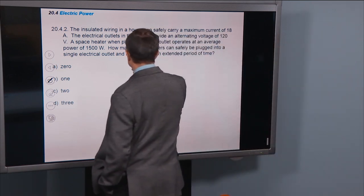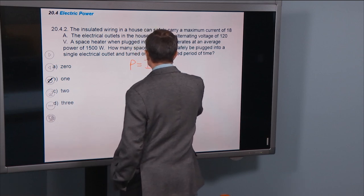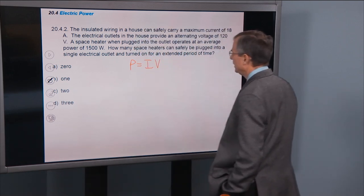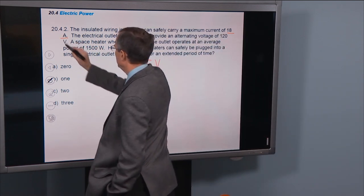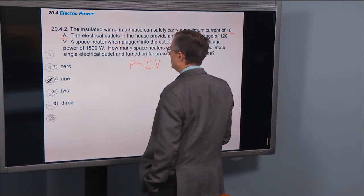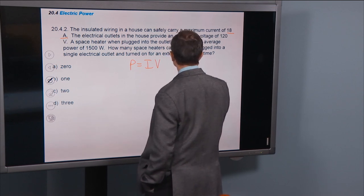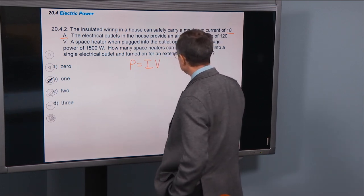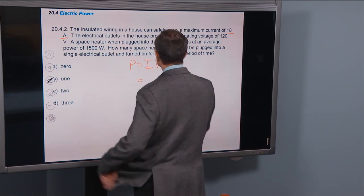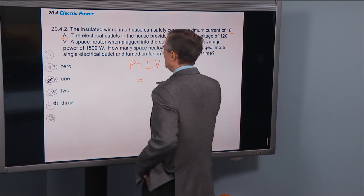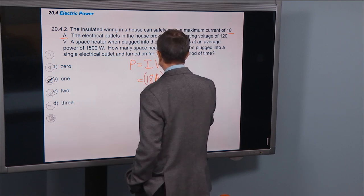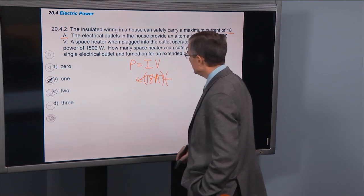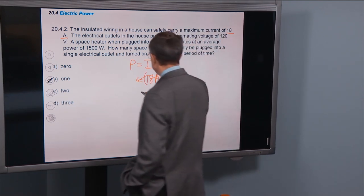So the power is I times V. We know the current is the maximum current that we can safely handle. And the voltage is 120 volts. And so if we plug in I times V, 18 amps, actually I'm going to do this a different way. I'm going to actually calculate the current that one heater draws.